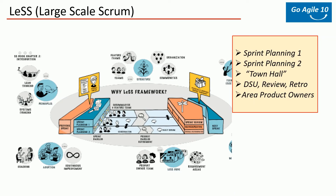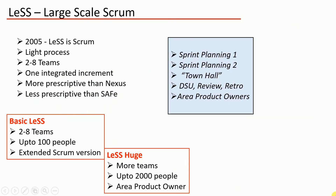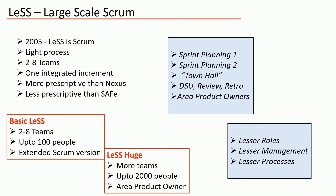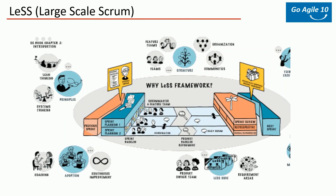Similarly, LeSS has product backlog meetings, sprint reviews, retrospectives, and so on. LeSS Huge has multiple Area Product Owners; the area product owners and the overall product owner make up the product owner team, with possible additional product managers. In LeSS Huge, each requirement area has four to eight teams. The main goal of LeSS is to solve things as simply as possible with fewer roles, less management, and fewer organizational structures.